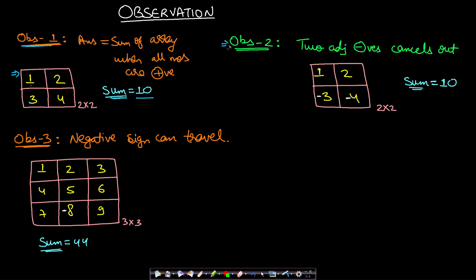Observation 2: if we have two adjacent negatives, they will always cancel out. If you choose -3 and -4 and multiply by minus 1, you get 3 and 4. The sum remains the same at 10.